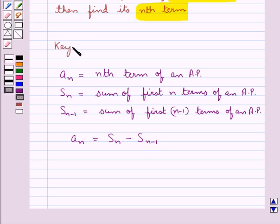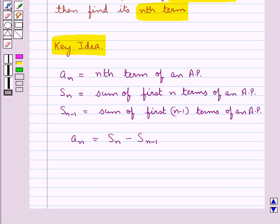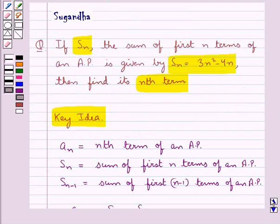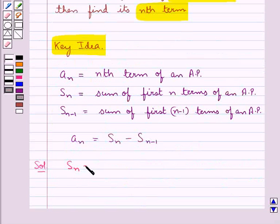This is the key idea that we use for this question. Let's proceed with the solution now. In the question we have that the sum of first n terms of an AP is given by S_n = 3n² - 4n.